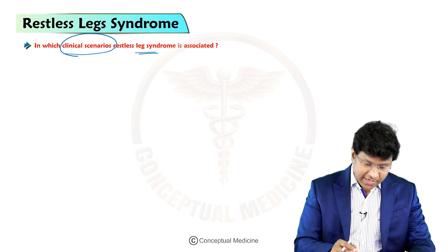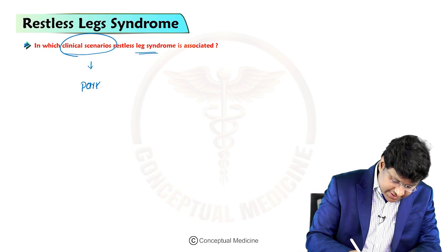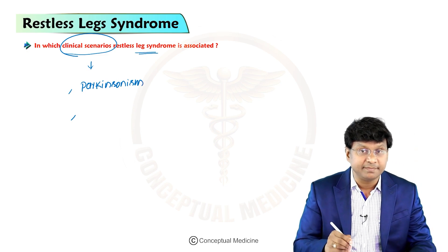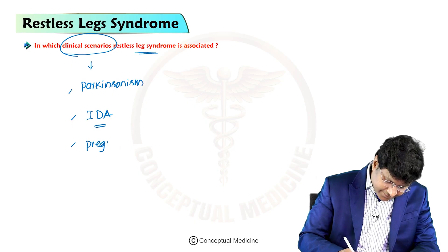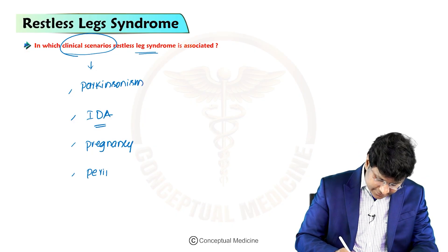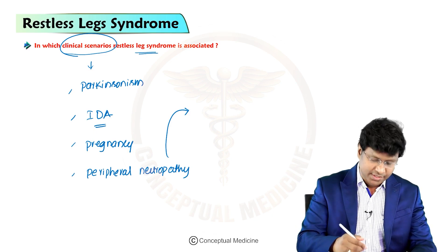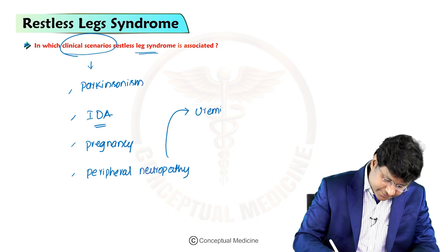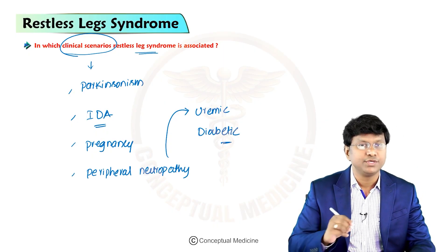In certain clinical scenarios, Restless Leg Syndrome is associated with other disorders. You can have this restless leg syndrome in Parkinsonism, in patients with iron deficiency anemia (IDA), in pregnancy, and in individuals with peripheral neuropathy — specifically uremic peripheral neuropathy and diabetic peripheral neuropathy.